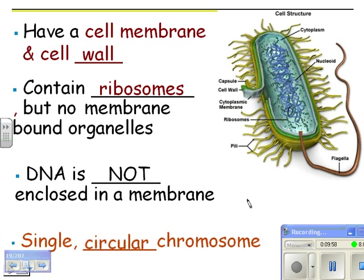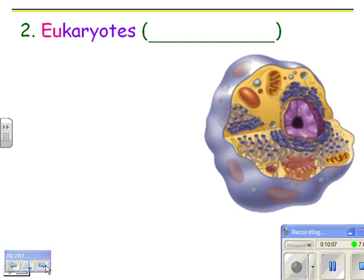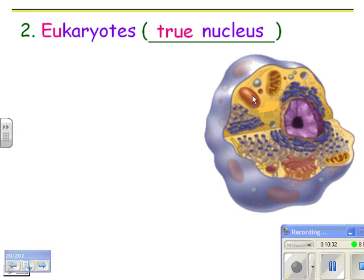Prokaryotes also have a single circular chromosome — so bacterial chromosomes are a circle, whereas your chromosomes have a start and an end. Now, eukaryotes — that's you. 'Eu' means true and 'karyote' means nucleus. Here's a cell that might be one of your cells. You can see membranes everywhere — the nucleus, endoplasmic reticulum, Golgi body, mitochondria, lysosome. There's cytosol in here too. When you look at a cell and see a whole ton of stuff, that's a eukaryotic cell.